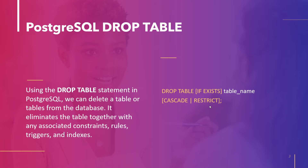The syntax is as follows: Drop Table IF EXISTS table_name CASCADE RESTRICT. Here, table_name is the name of the table that we want to remove from the database. IF EXISTS, CASCADE, and RESTRICT are optional keywords we will discuss in later topics.